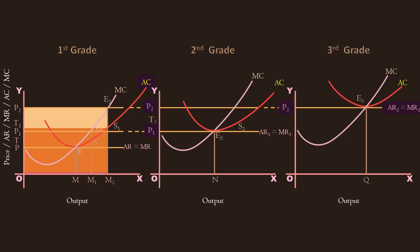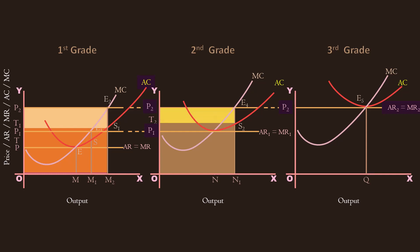Second grade land is intensively cultivated. It produces N1 units of corn now. Its cost is O T2 S2 N1. Its revenue is O P2 E4 N1. Second grade land becomes intramarginal land. It earns a surplus. Its rent is T2 P2 E4 S2.